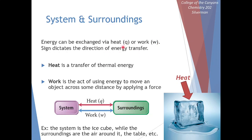Negative values for heat mean that our system is giving off heat — exothermic. Negative values for work mean that our system is doing work on the surroundings, pushing against the surroundings. Positive values for heat mean that our system is endothermic, absorbing heat. Positive values for work mean that work is being done on our system.